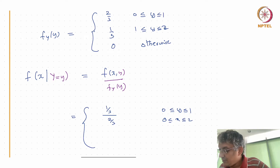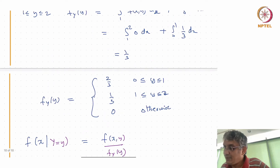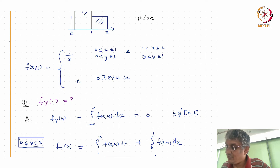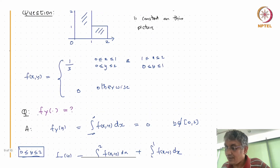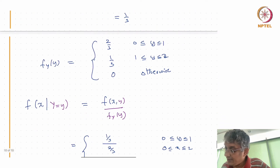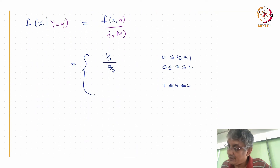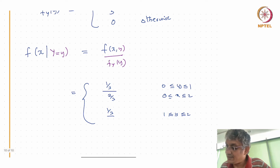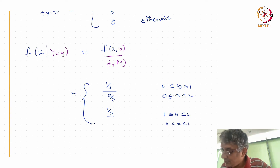When y is between 1 and 2, the density takes positive value only when x is between 0 and 1. So you get (1/3) / (1/3) = 1 for 0 < x < 1, and 0 otherwise.